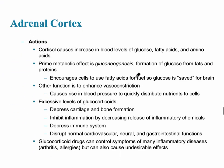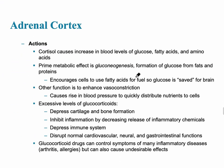Cortisol is going to increase blood levels of glucose, fatty acids, and amino acids — the major fuels that are needed. Another metabolic effect is gluconeogenesis, which is the formation of glucose from fats or proteins — non-carbohydrate substances.